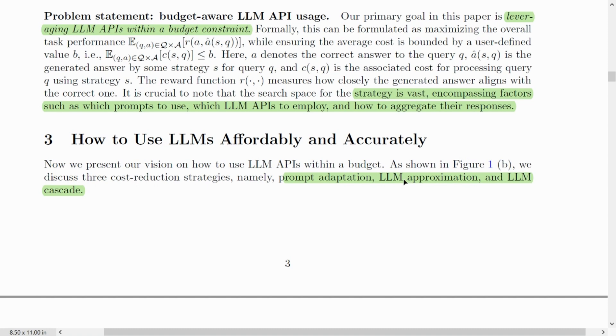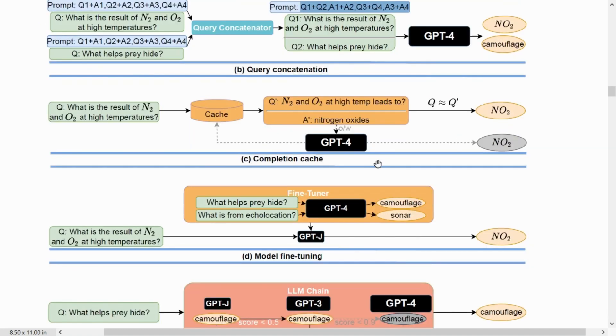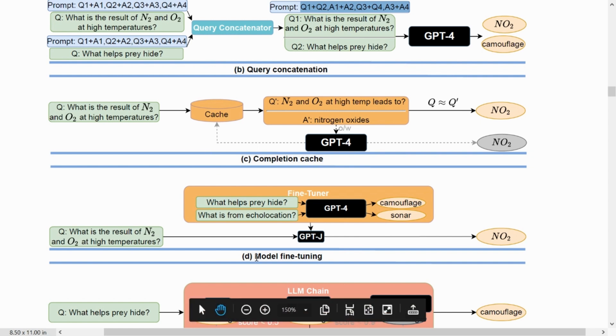The next is the second strategy, LLM approximation. Here, for example, completion cache. We have a cache memory here. The previous queries, the results of the previous queries are stored in the cache. For any new queries, cache is searched first for any answers. And if there's nothing in the cache, we go and search for the fresh results. Fine-tune modeling. Here, we initially use a higher cost or higher accuracy model, for example GPT-4, to train a model, to train for example GPT-J, because this is a lower cost. And then we use for any subsequent prompts, we use this fine-tuned model GPT-J, which is a lower cost, to get the results.